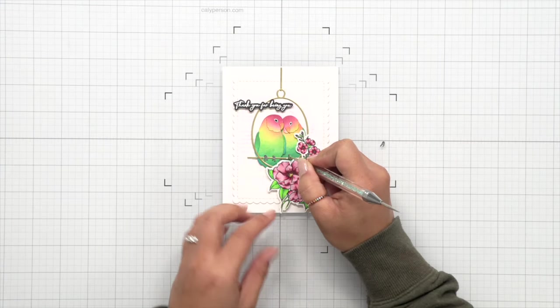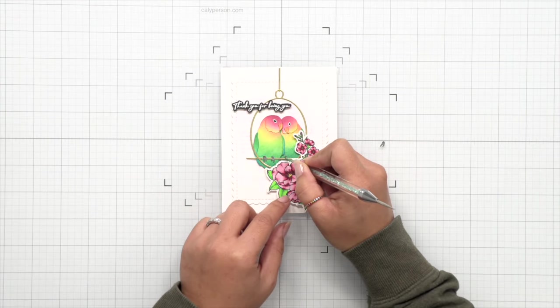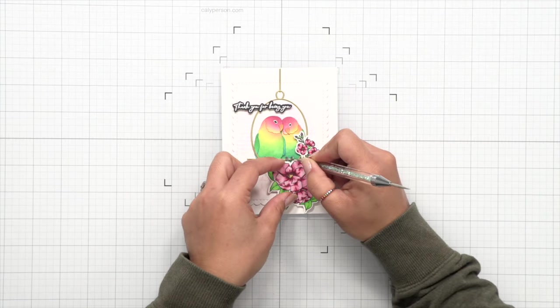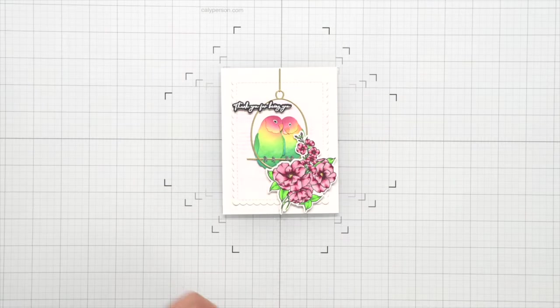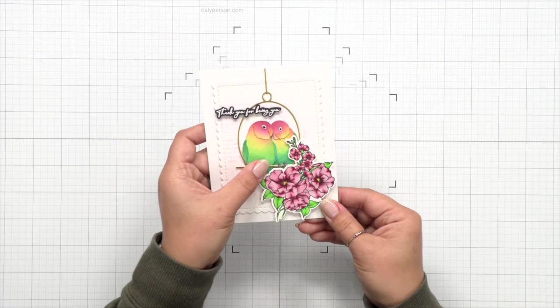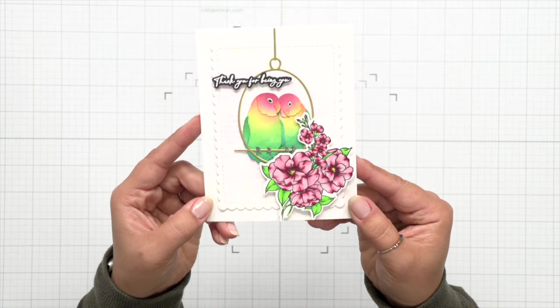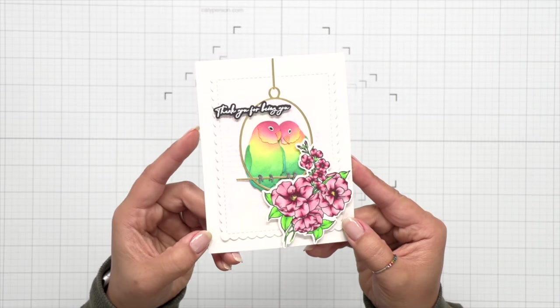And I did forget the little parrot's feet, so I die cut those in gray and applied some gray ink on them to give them a little bit of shading. Then I applied their feet over that little crossbar on the ring and then that finishes this card.